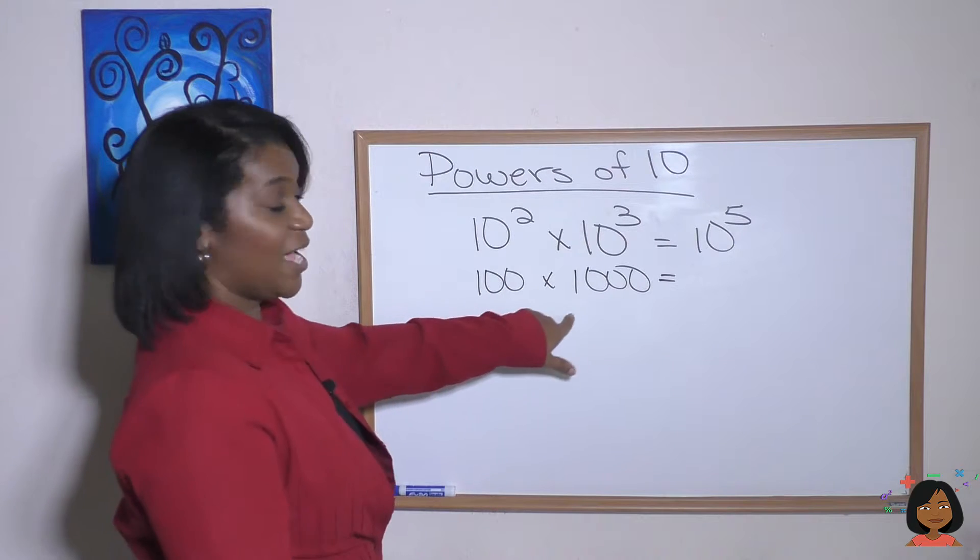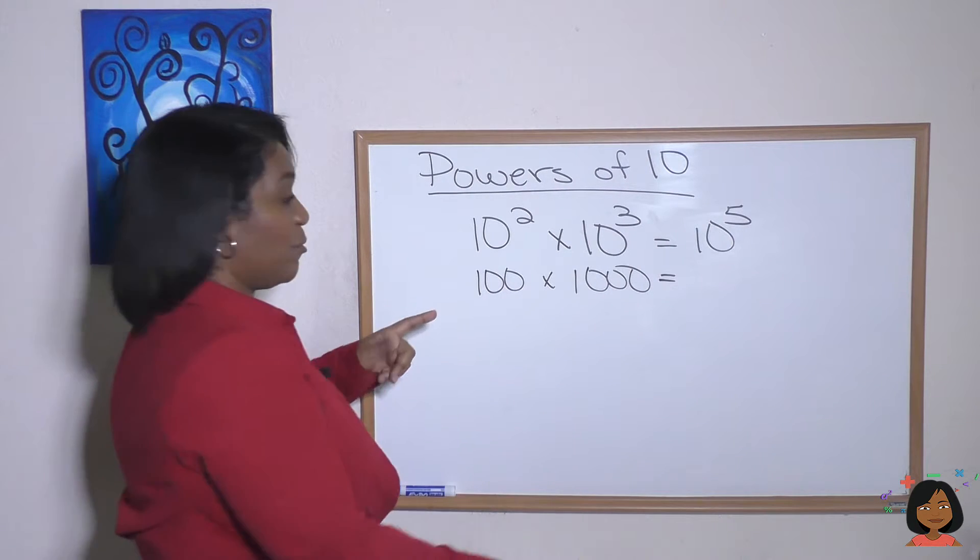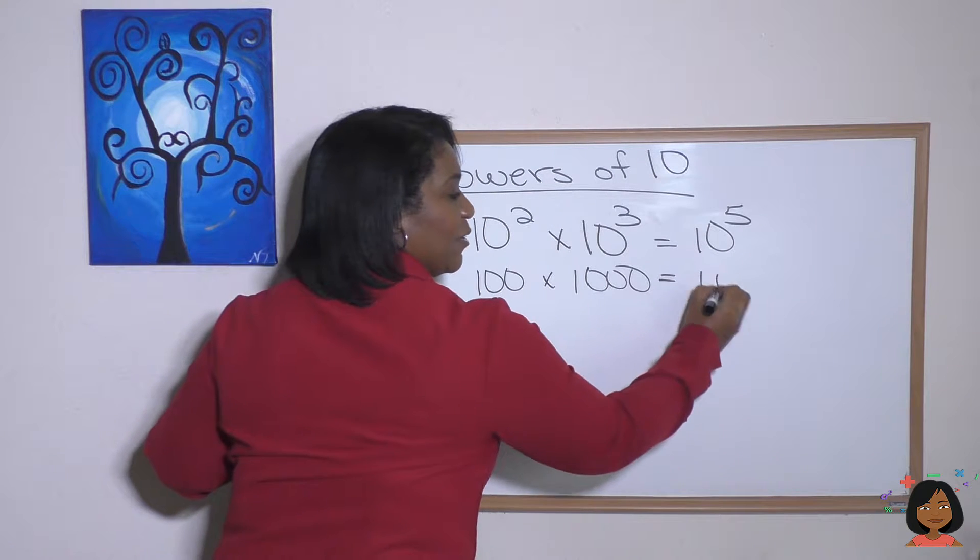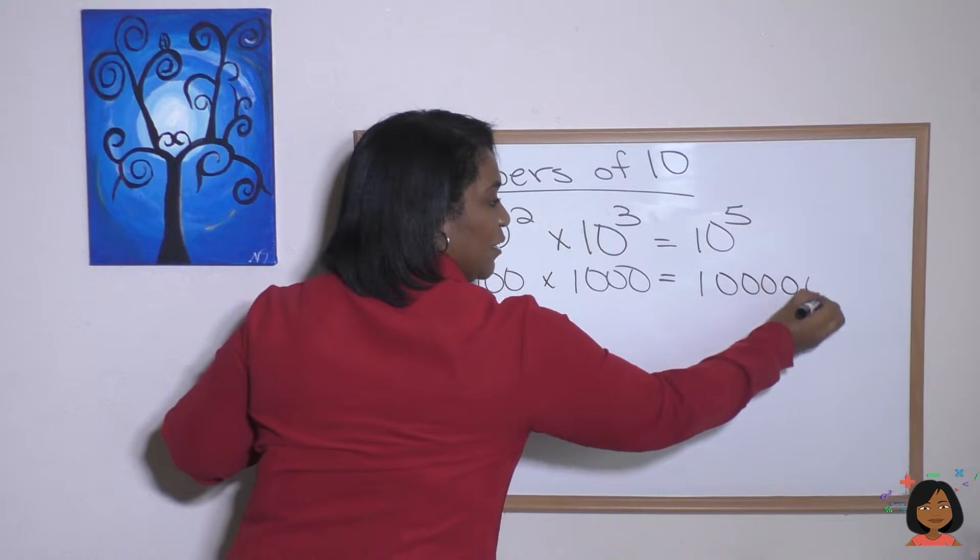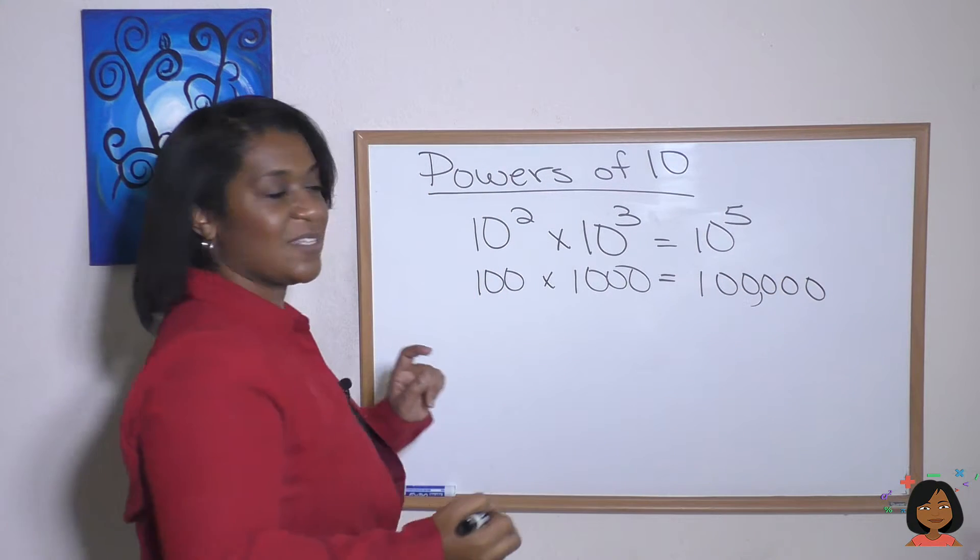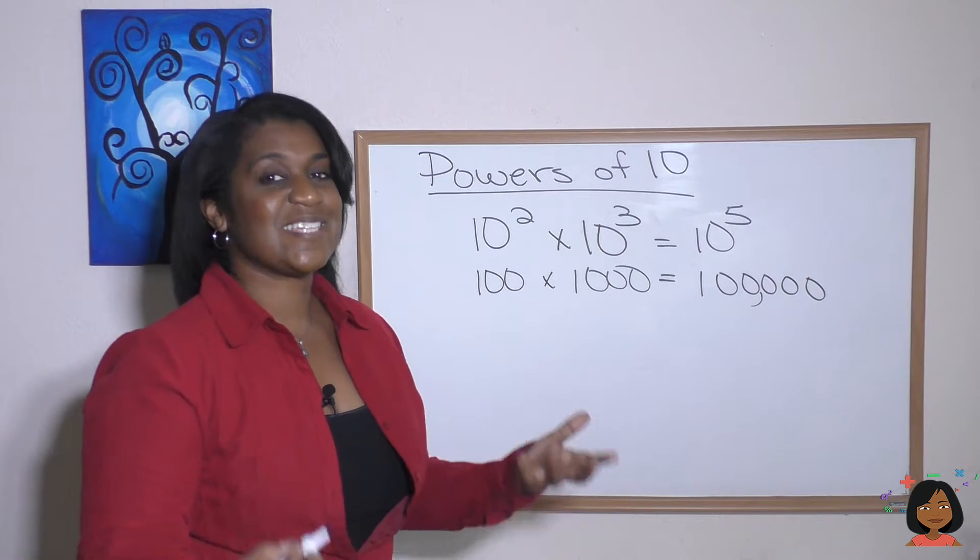So 100 times 1,000, just count up the number of zeros. One, two, three, four, five. Okay, so 100,000, which is the same thing as 10 to the fifth.